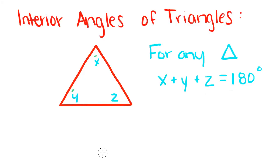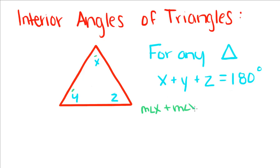We're going to be talking about interior angles of triangles. For any triangle, x plus y plus z is equal to 180 degrees. So this is just saying that the measure of angle x plus the measure of angle y plus the measure of angle z is equal to 180 degrees.